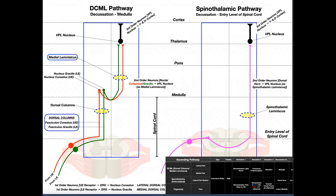Let's start going over the DCML pathway. DCML stands for dorsal columns medial lemniscus. We'll see each of those pieces in the pathway. The first-order neurons in this pathway are called pseudo-unipolar neurons. That means they have a central cell body with a distal axon and a proximal axon — the proximal axon leads into the spinal cord and up it.